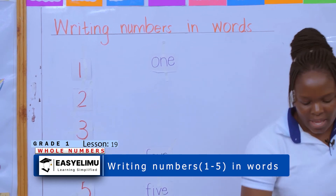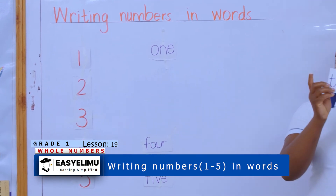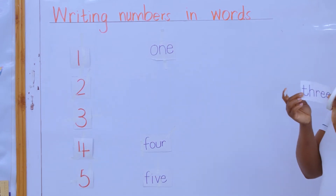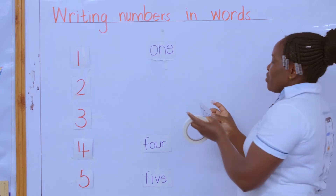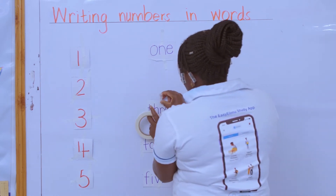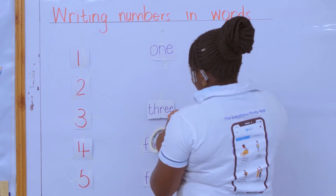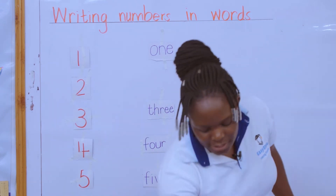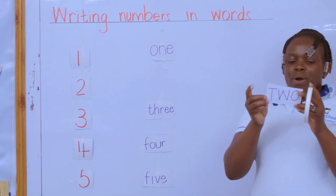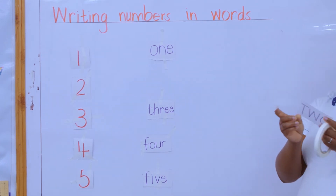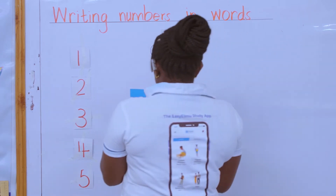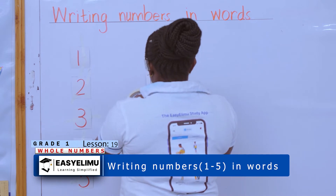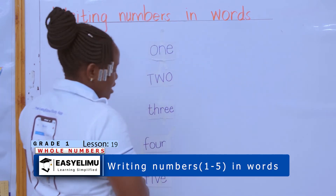Which word is this? The word is 'one.' The word is 'one.' So one is the first number — we stick it where number one is. And which word is this? The word is 'three.' Say 'three.' So where do we attach three? Three goes here — it's the third number.